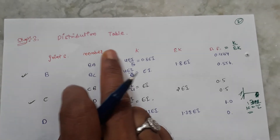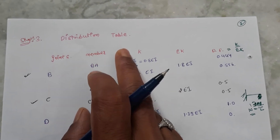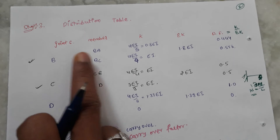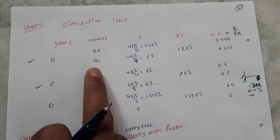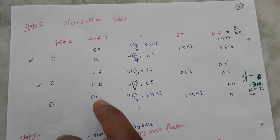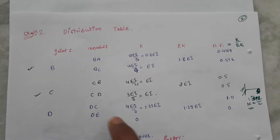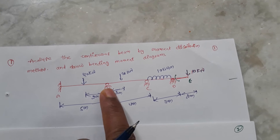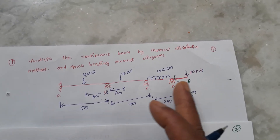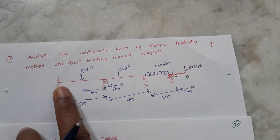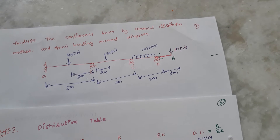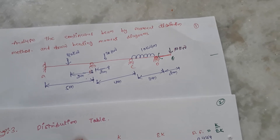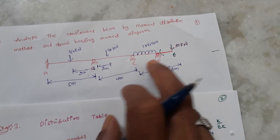Step 3: find the distribution factors. We need to make the distribution table for joints B and C. We consider members BA, BC, CB, CD, and DE. For member B-to-A, the stiffness is 4EI by l. Similarly B-to-C is 4EI by l, and C-to-B is also 4EI by l.